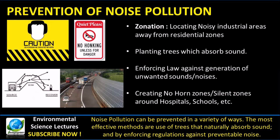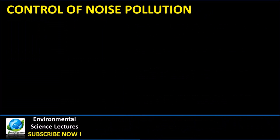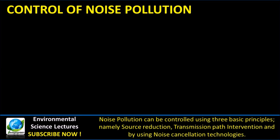How do we prevent noise pollution? Noise pollution can be prevented in a variety of ways. The most effective methods are the use of trees, which naturally absorb sound, and also by enforcing regulations against preventable forms of noise pollution.